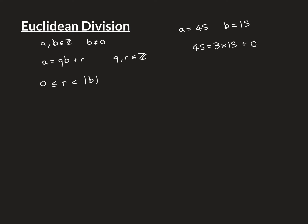For A = 45 and B = 15: since 45 is a multiple of 15, we can write 45 = 3 × 15 + 0. The quotient is 3, the remainder is 0, and this satisfies the constraint since 0 is smaller than |15| = 15. For A = 45 and B = 20: we can write 45 = 2 × 20 + 5. The quotient is 2, the remainder is 5, which satisfies the inequality — it's non-negative and smaller than 20.